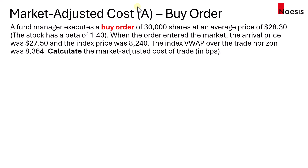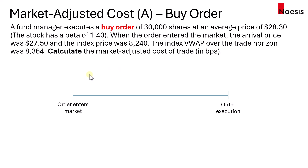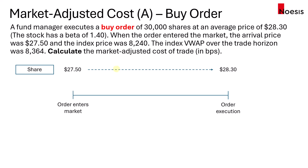Before we start with the calculation, let us put the prices on the timeline. We have two events here — one would be the point where the order enters the market, and up to the point where the order is executed. For the share, the arrival price is $27.50, and then it goes all the way up to the execution price, which is $28.30. For the index, we will measure the index arrival price, which is $8,240 — measured at the point where the order enters the market — and the index VWAP would be $8,364.